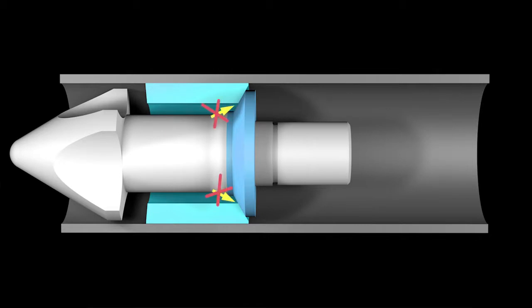The plastic cannot flow backwards, because when the screw pushes forward, a check ring is shoved against a thrust ring to block the backwards movement of the molten plastic.